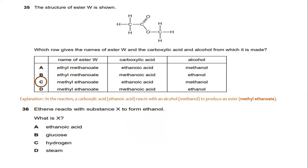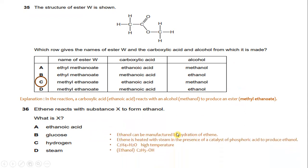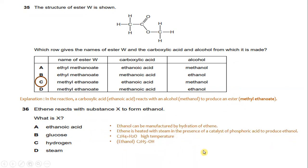Ethylene reacts with substance X to form ethanol. What is X? The answer is steam. Ethanol can be manufactured by hydration of ethylene. Ethylene is heated with steam in the presence of a catalyst of phosphoric acid to produce ethanol: C2H4 + H2O at high temperature gives ethanol. So X is steam.